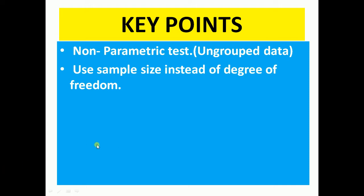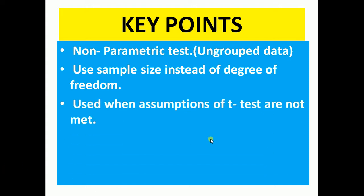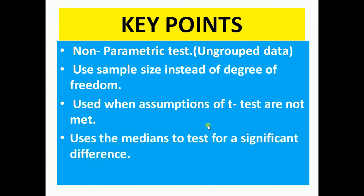The third point is that Man-Whitney is used when assumptions of t-tests are not met — when they cannot be fulfilled, we do the Man-Whitney test. The fourth point is that it uses the medians to test for a significant difference. In the t-test we use means, but here in Man-Whitney we use medians to test for significant difference.